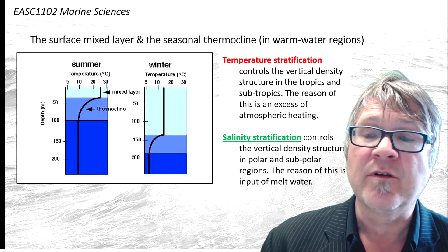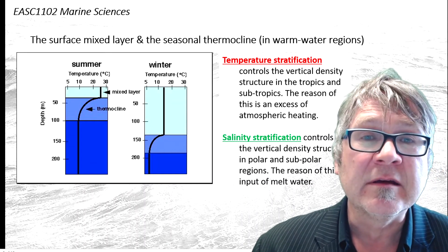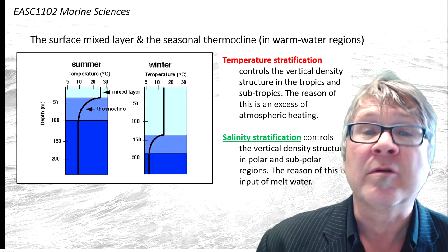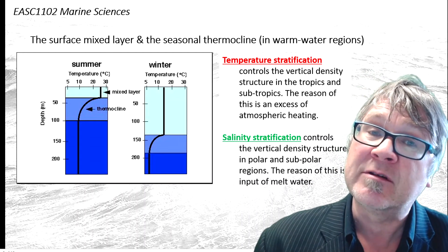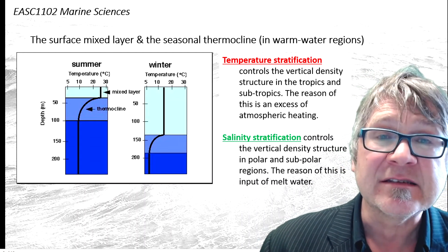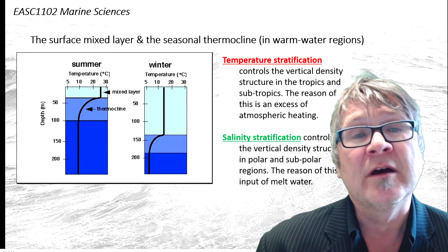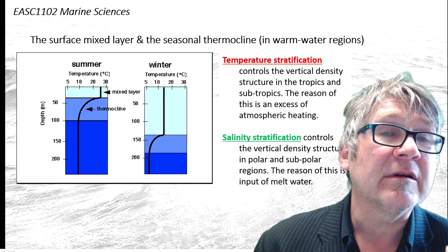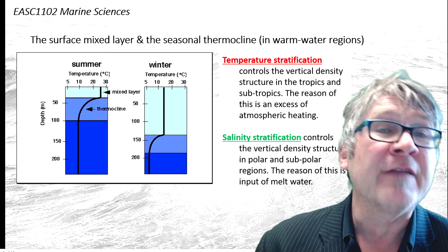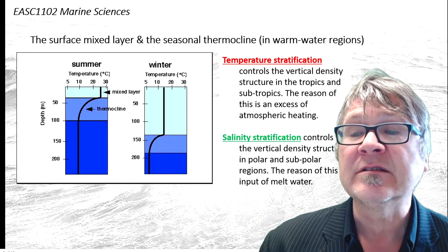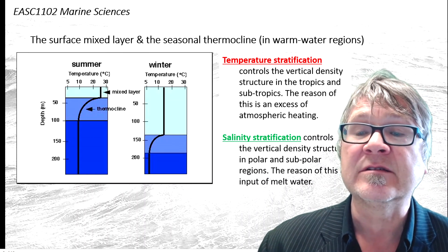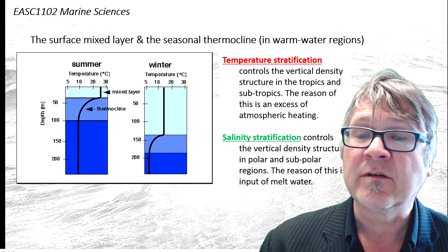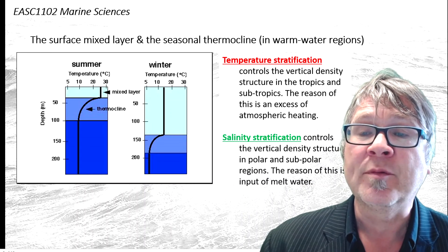This comes from the freshwater influence, or you could say the continental runoff excess. This is why the Arctic Ocean can form sea ice — sea ice being the ice that sits on the surface of the open ocean.